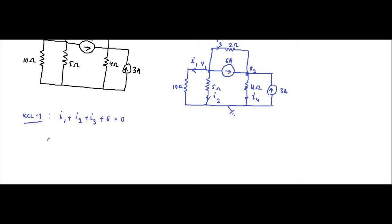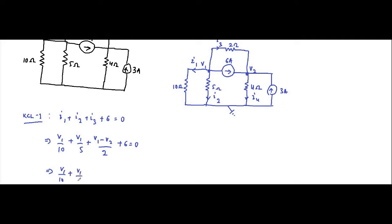So: i1 plus i2 plus i3 plus 6 equals 0. Now i1 is v1 by 10, i2 is v1 minus v2 by 2. Substituting: v1 by 10 plus v1 by 5 plus v1 by 2 minus v2 by 2 equals minus 6.